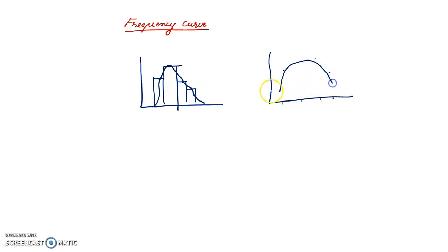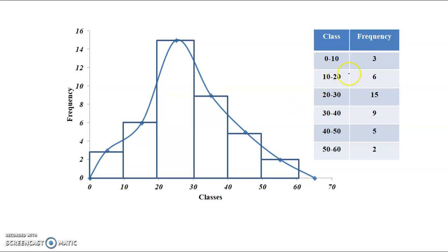The problem gives us classes and frequencies: 0 to 10, 10 to 20, 20 to 30, 30 to 40, 40 to 50, and 50 to 60. The corresponding frequencies are 3, 6, 15, 9, 5, and 2.